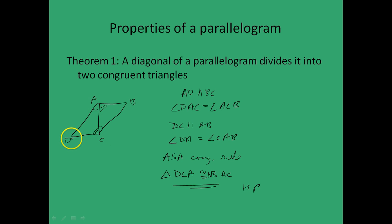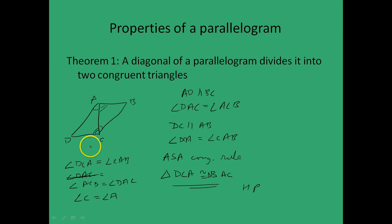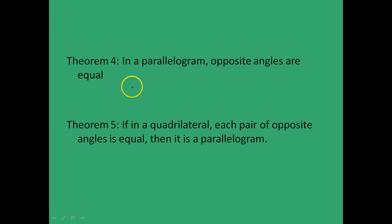We have angle DCA equal to angle CAB, and angle DAC equal to angle BCA as alternate angles. On adding these two, angle DCA plus angle ACB gives angle C, and similarly we get angle A. So angle C equals angle A — and the same can be done for the other pair. Theorem 5 states: if in a quadrilateral each pair of opposite angles is equal, then it is a parallelogram — the converse of Theorem 4.